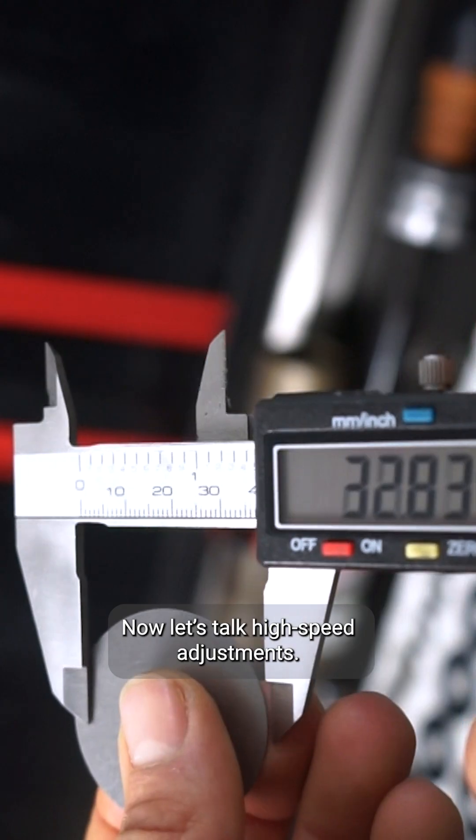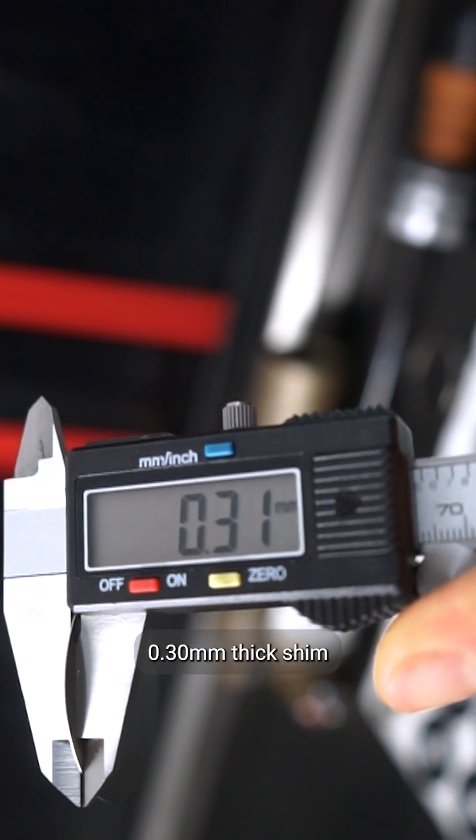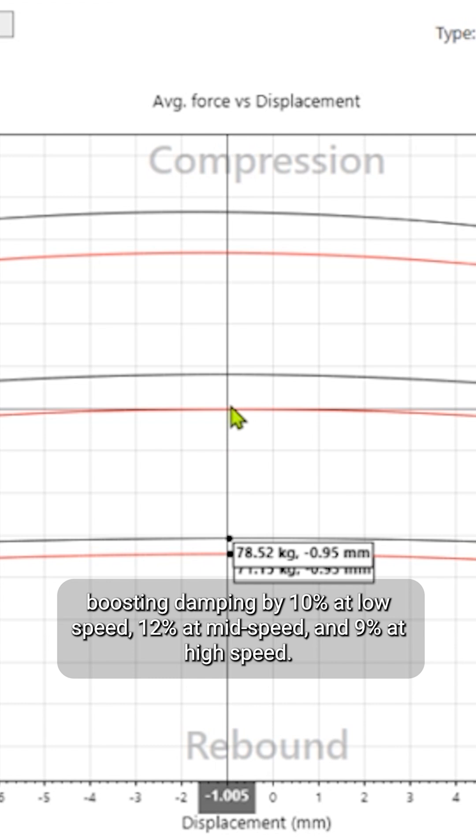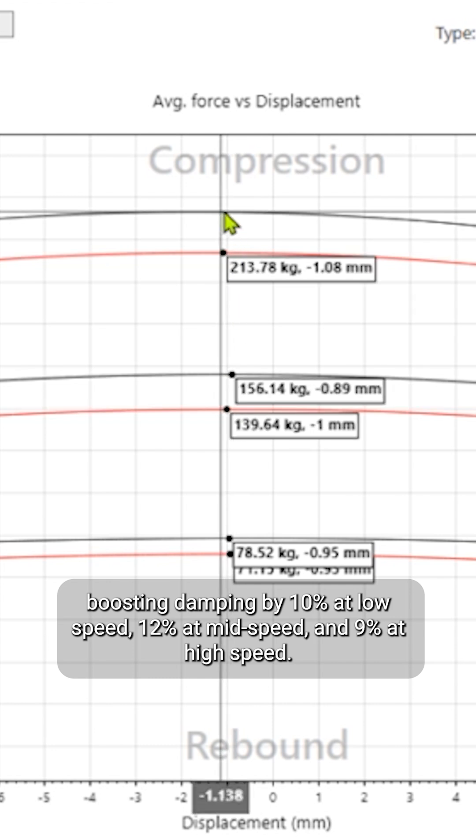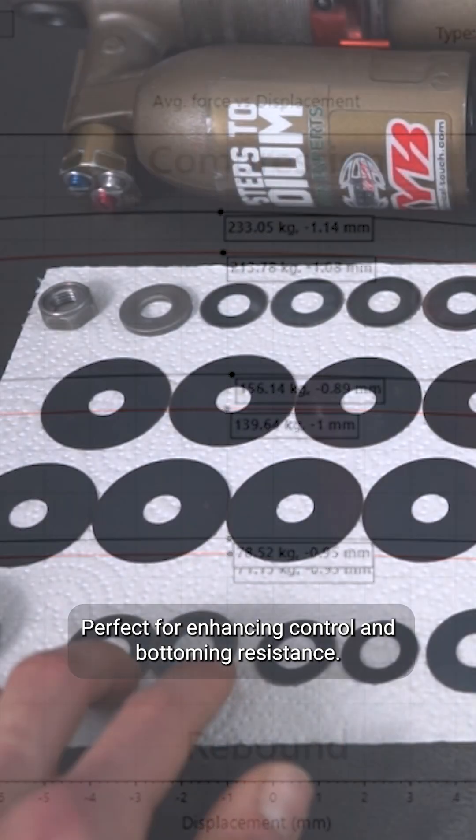Now let's talk high speed adjustments. Adding a 42mm diameter, 0.3mm thick shim stiffens the high speed circuit, boosting damping by 10% at low speed, 12% at mid speed, and 9% at high speed. Perfect for enhancing control and bottoming resistance.